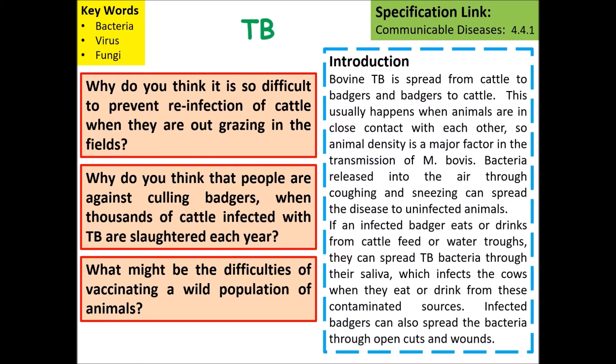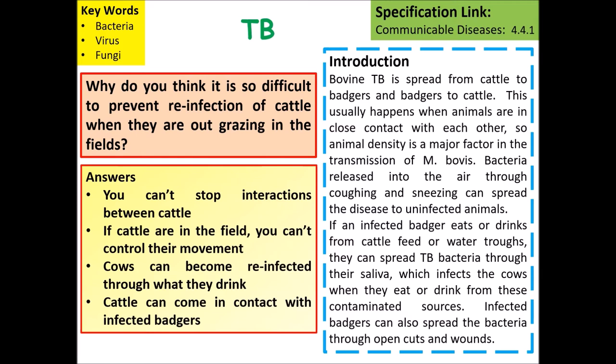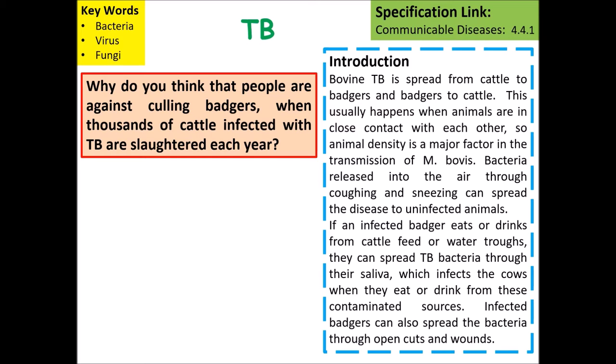There are three short questions to consider. Why is it difficult to prevent reinfection of cattle when they are out grazing in fields? Key points are that you can't stop interactions between cattle — they are out in large fields so you can't control their movement. They can be reinfected through what they are drinking, and they may come into contact with infected badgers.